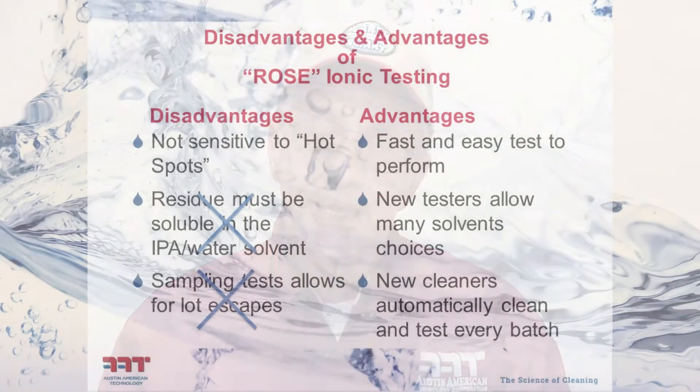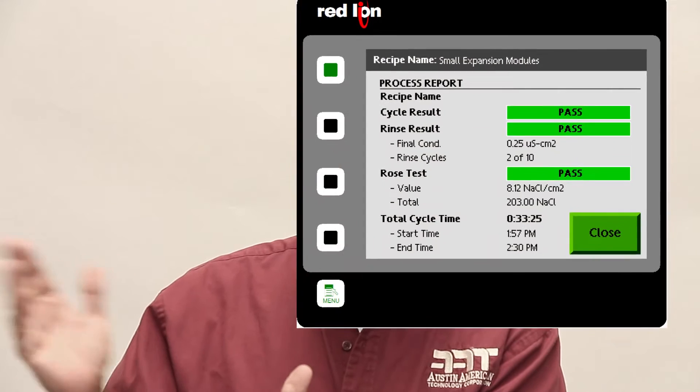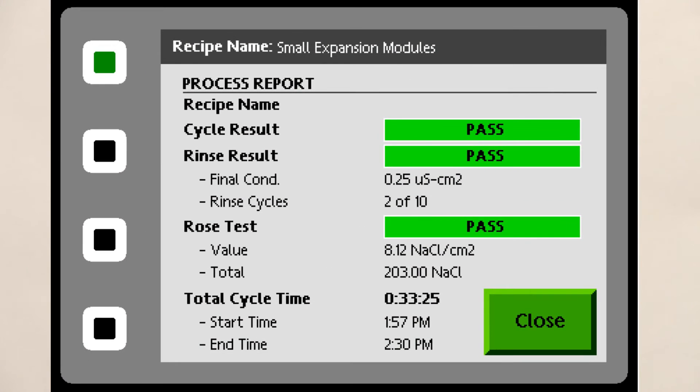The last strength has just come onto the market: the ability to run the ROSE test within your cleaning process. New batch cleaners now allow you to run a ROSE test after washing the board, after rinsing, and just before drying — automatically, as part of the process. Data is collected and stored, and every batch that comes out gets a ROSE test run on it without pulling a sample or having an operator perform a separate test. This eliminates two of the three earlier limitations.